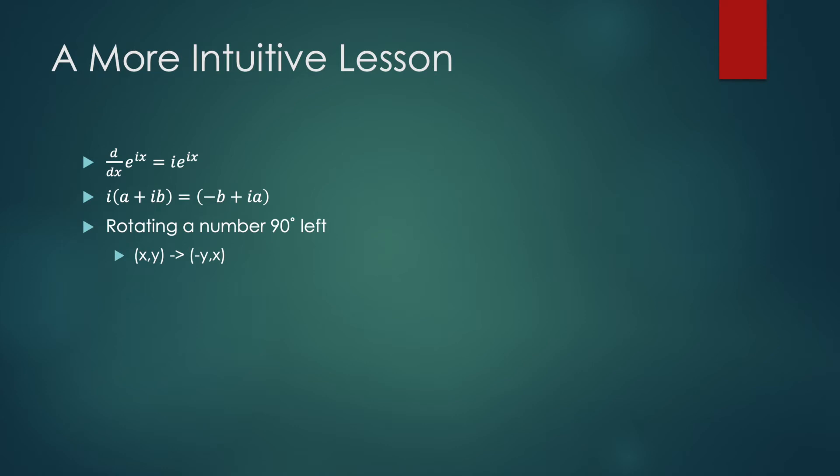So we have i times e to the IX. In other words, the derivative of e to the IX is e to the IX multiplied by i. A very unique and interesting property of i is that it rotates numbers 90 degrees to the left in the complex plane.